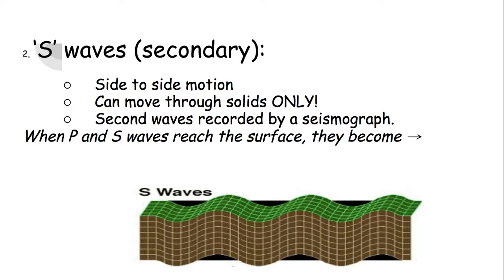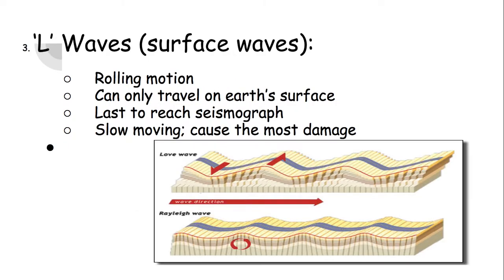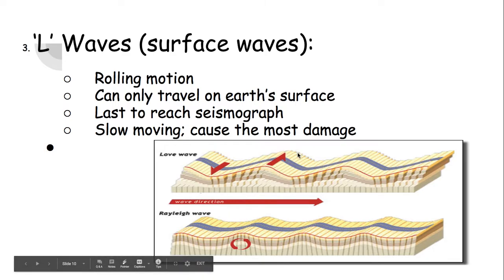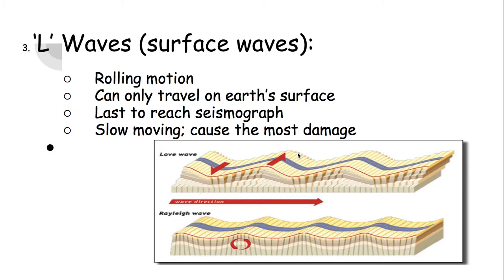When P and S waves reach the surface, they become our last kind: L waves. You can think of L for last — they are the slowest. The L actually stands for Love, because it's named after a person, not because these are nice things. L waves have a mixture of that push-pull and side-to-side — it's like a rolling or twisting motion. These only travel on the surface and they reach the seismograph last. Because they have this twisting rolling motion, they cause the most damage to buildings. The main danger in an earthquake is not the earthquake itself — it's being crushed by something falling, like a piece of furniture or part of a building.